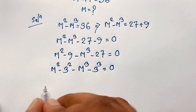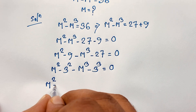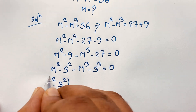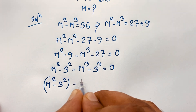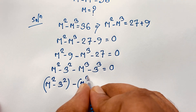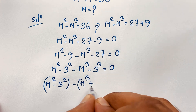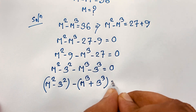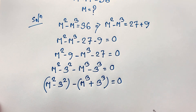Now here, m squared minus 3 squared — I take a negative sign as common — so it will be m cubed plus 3 to the power 3, is equal to 0.